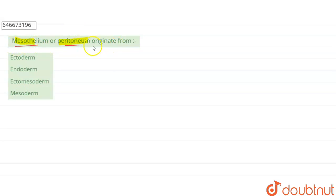First, let's understand what mesothelium or peritoneum is. This is the epithelium of the abdominal cavity. It lines our abdominal cavity as well as our chest.